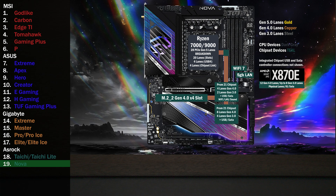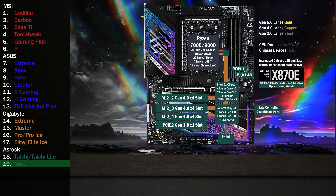The second chip has eight lanes at Gen 4 and four lanes at Gen 3. It sends one Gen 3 lane to a SATA controller for two SATA connectors. Two more Gen 4 M.2 slots connect with four lanes each. A Gen 3 x1 slot connects with one lane below. Two lanes at Gen 3 connect to a PCIe switch, connecting to a two-lane Gen 3 x16 slot and a two-lane Gen 3 M.2 slot. The switch will send two lanes to the x16 slot or two lanes to the M.2, depending on what's being used.